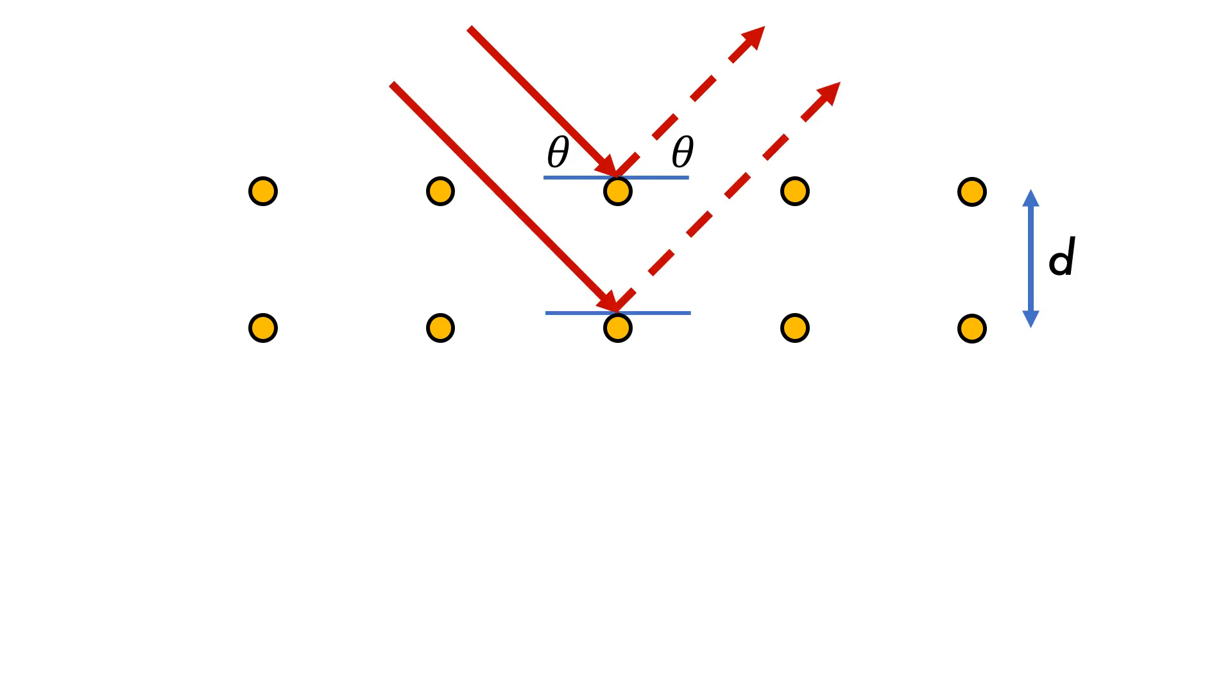Well, if we have two parallel beams, they are identical up to point A, but the second beam must travel an extra distance of AB plus BC in order to interact with the particle. For there to be constructive interference, this extra distance must be some integer multiple of the wavelength.